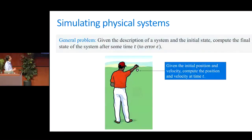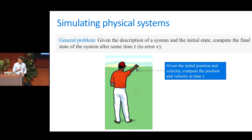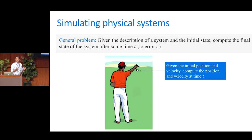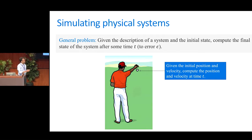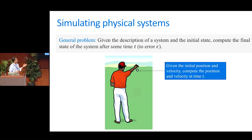Let me describe the general problem we're talking about — simulating a physical system. The general problem is: I'll tell you what a system looks like right now, and you have to tell me what the system's going to look like after some time t. So I give you an initial state, I tell you how the system evolves in time, and you have to figure out the final state. A classical example would be you drop a ball, and I give you the initial position and velocity, and you've got to figure out the position and velocity after some time t.